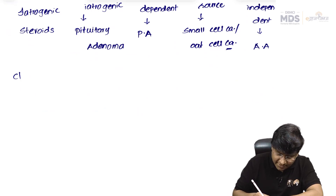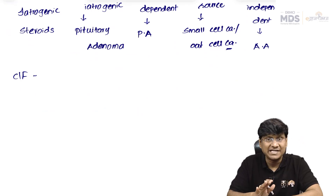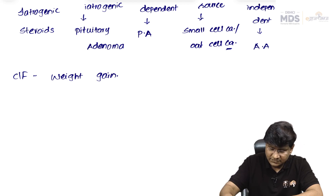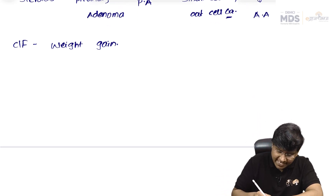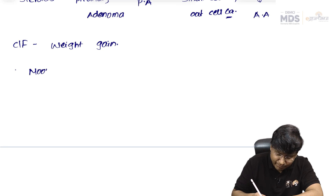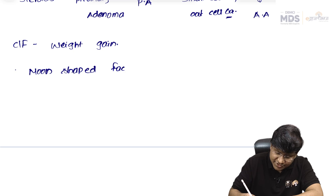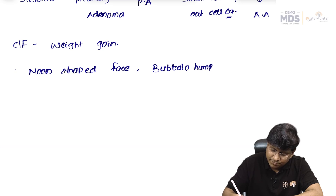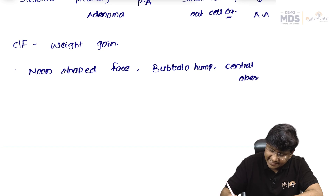Regarding clinical features: the earliest clinical manifestation of Cushing's is weight gain. Due to redistribution of fat, patients will have a moon-shaped face and buffalo hump, as well as central obesity.